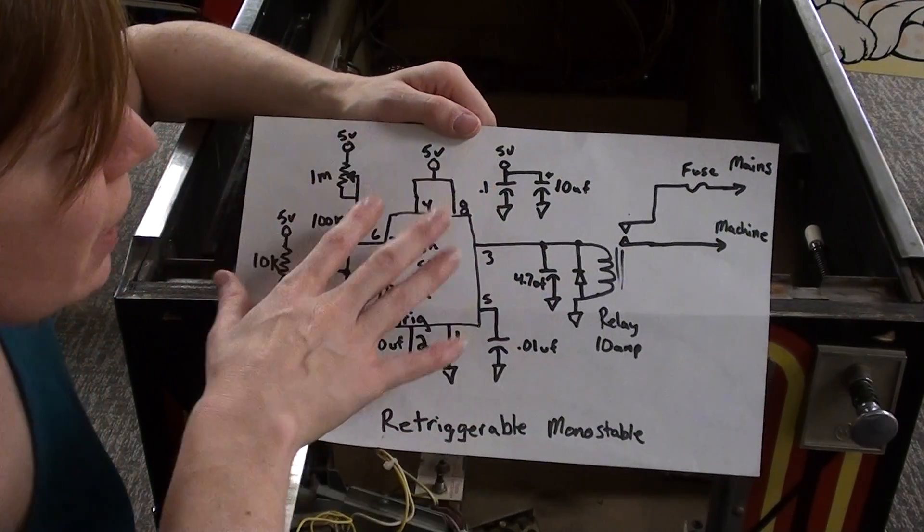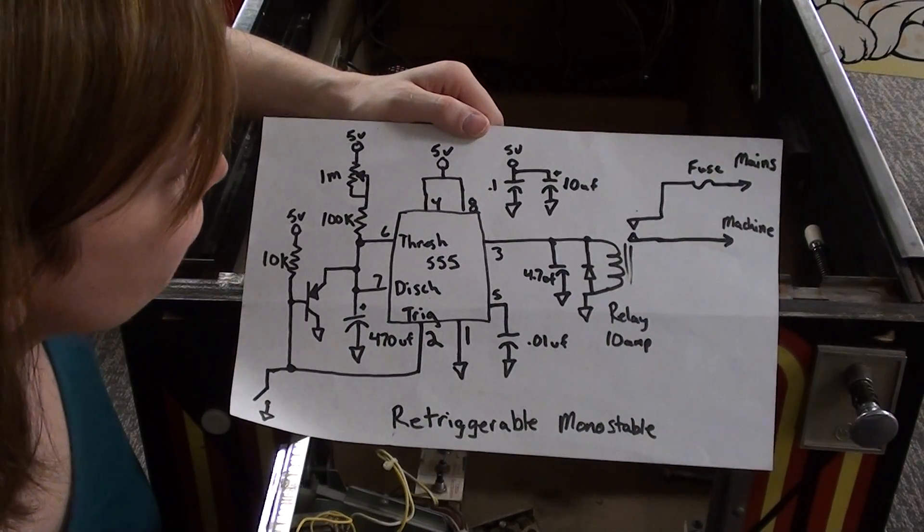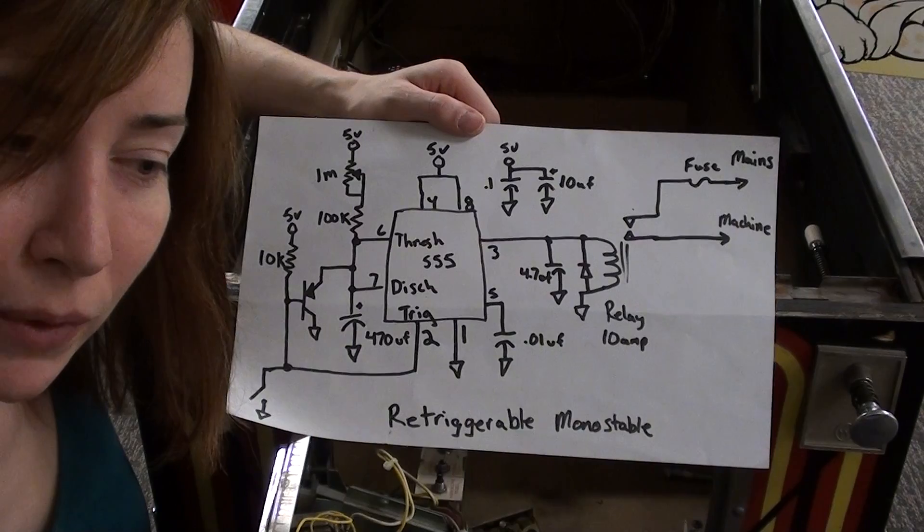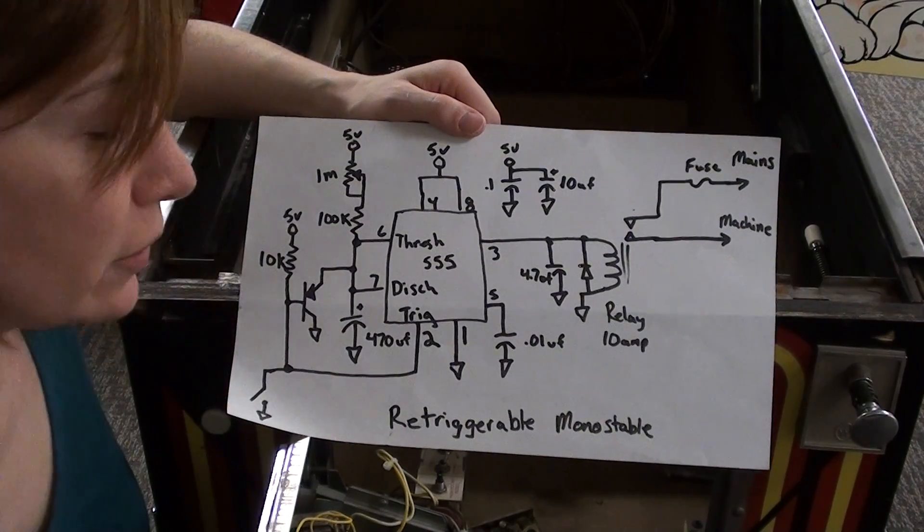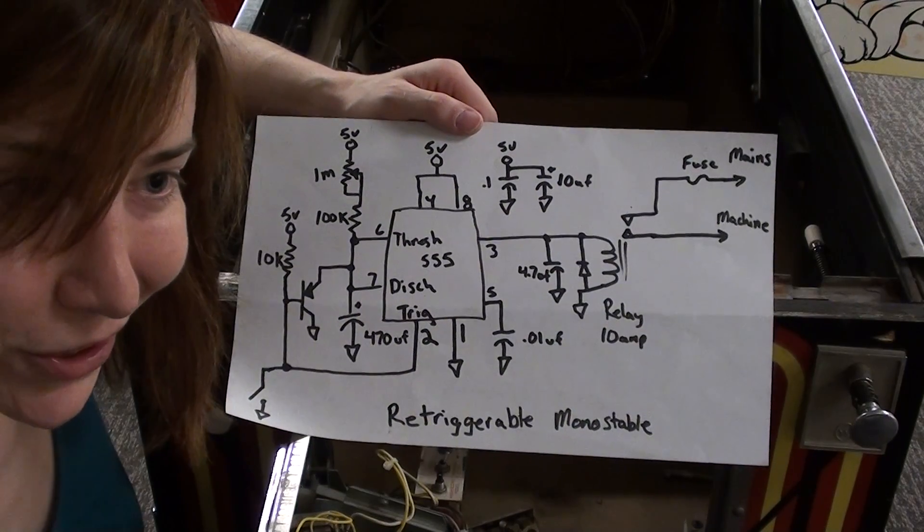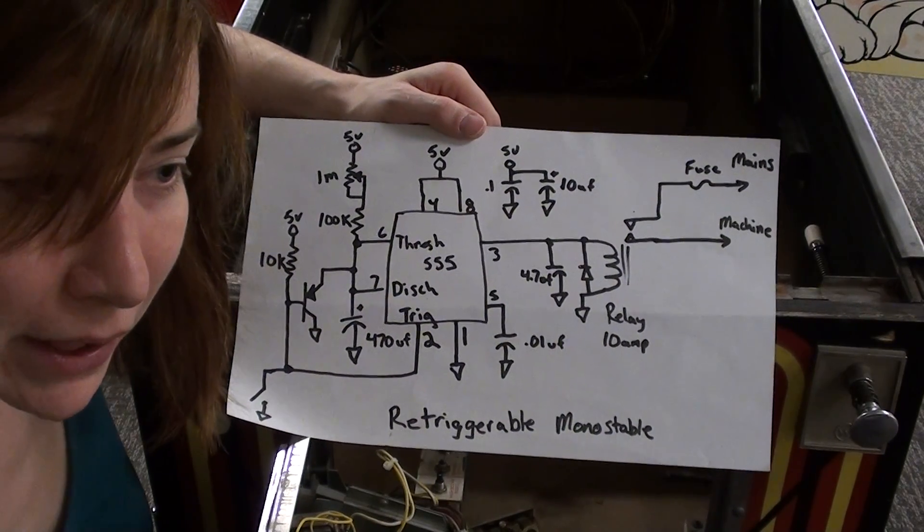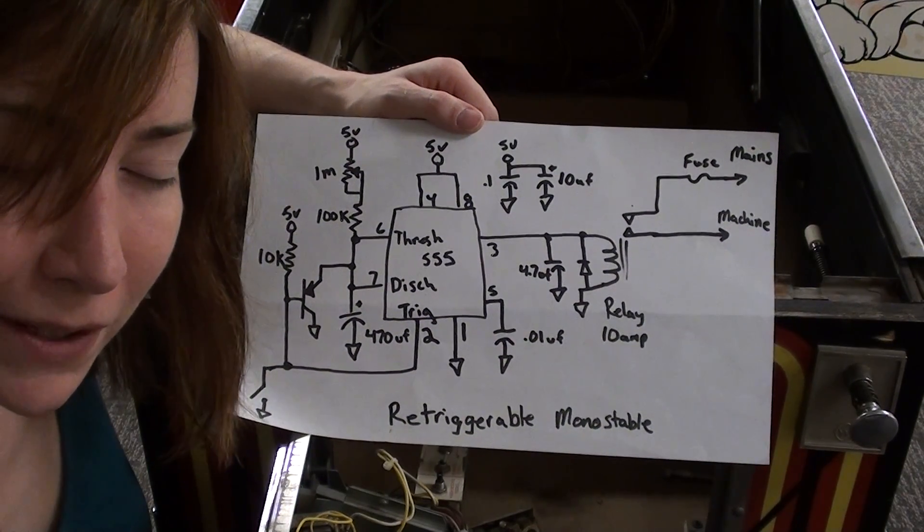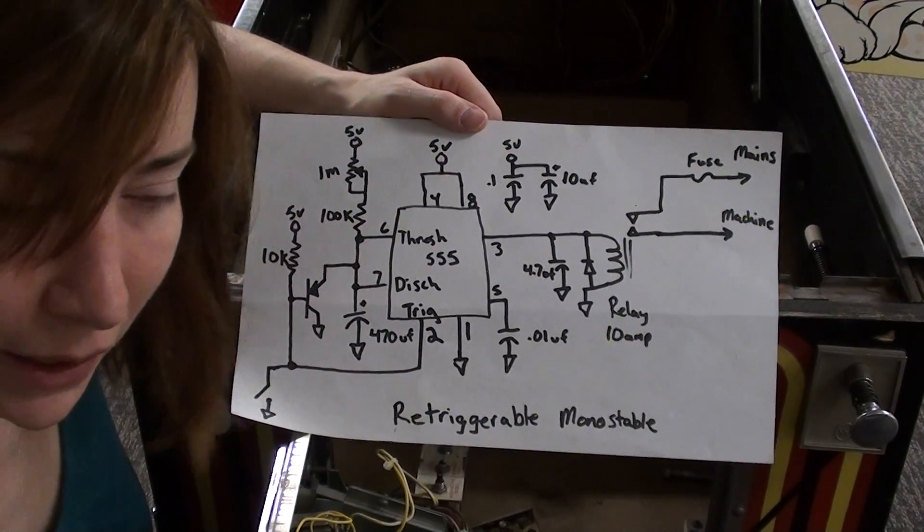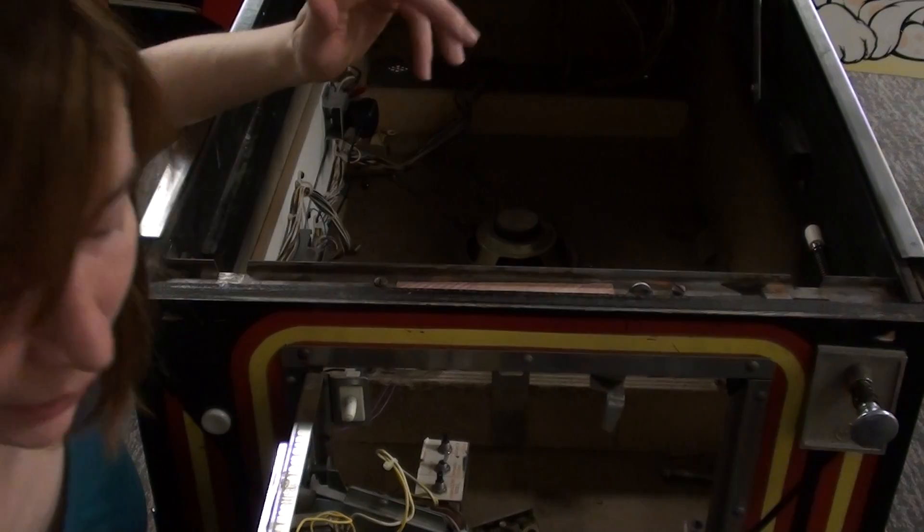And the supply voltage, a nice advantage to the 555 is that it runs over a wide supply range. I found a little wall wart that runs at 5 volts, but this circuit should run just fine. I don't know what a conventional 555 tops out at, but it's pretty high. So it could be almost any wall wart that you find.